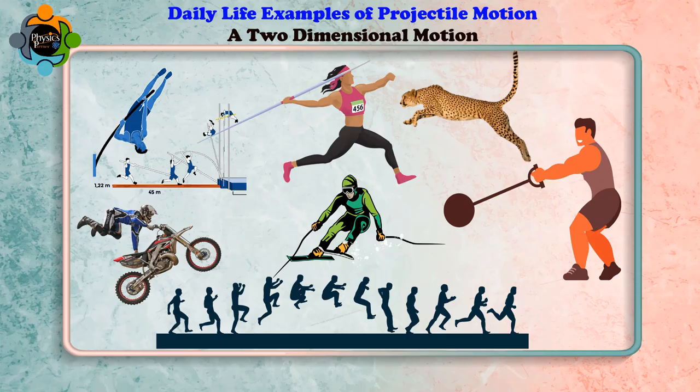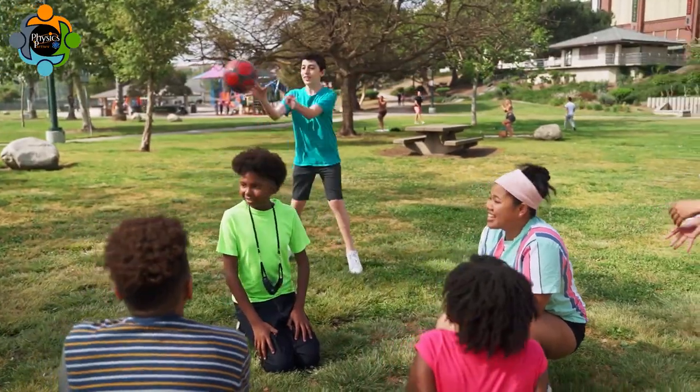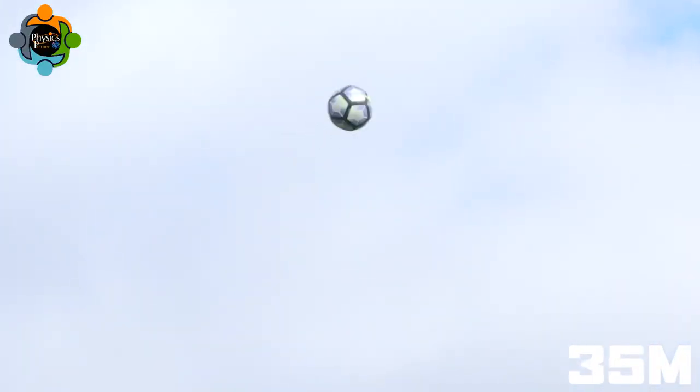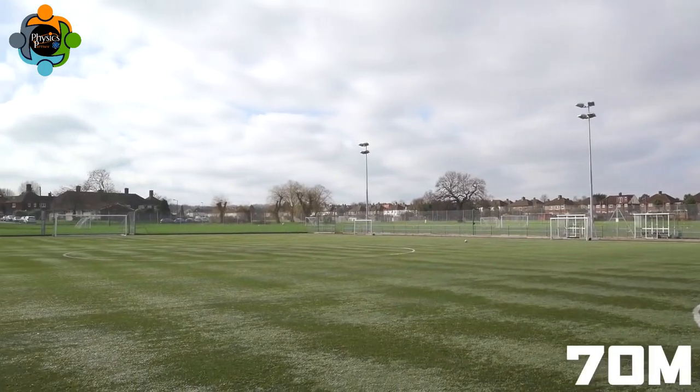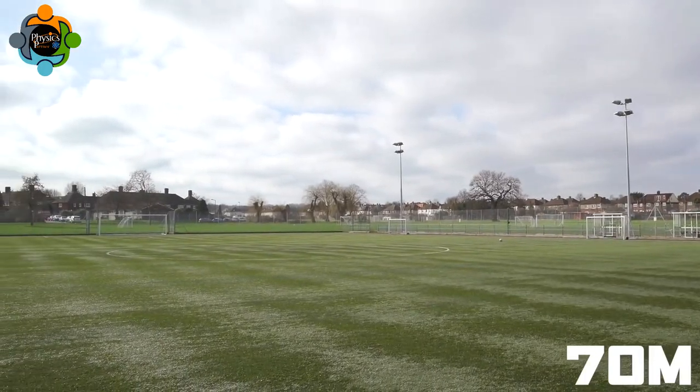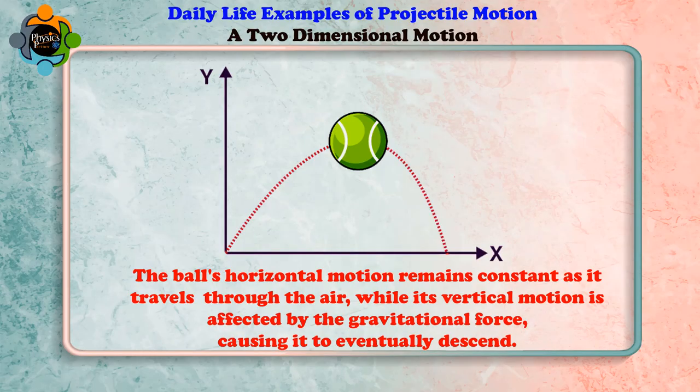To better understand this concept, let's look at a real life example: throwing a ball. When you throw a ball, it follows a curved path starting from your hand and eventually falling back to the ground. The ball's horizontal motion remains constant as it travels through the air, while its vertical motion is affected by gravitational force.